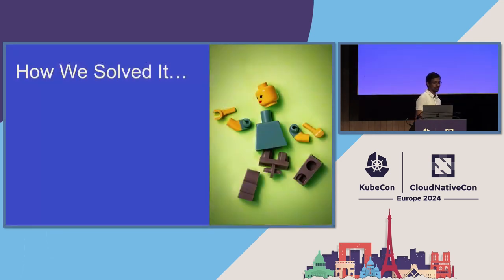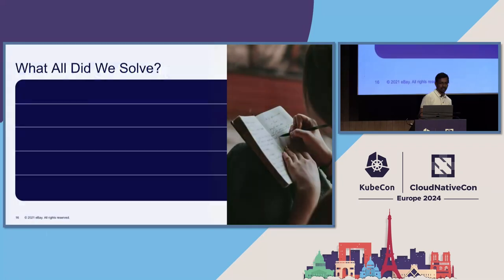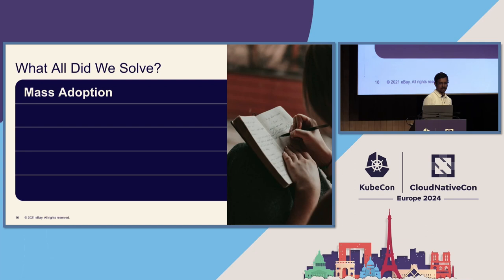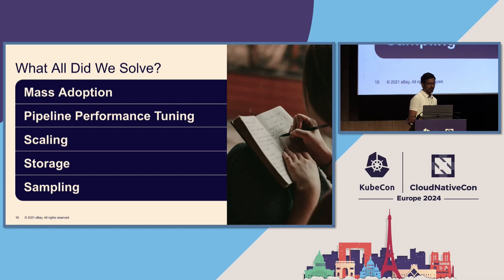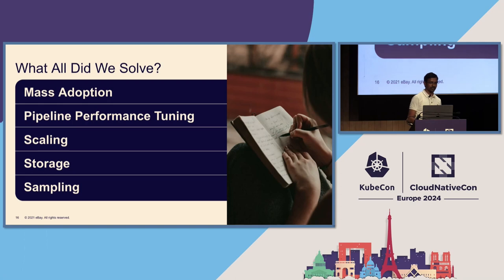So how did we go about solving this? There are multiple things that we did: first, we solved for mass adoption; we did pipeline performance tuning; we did some scaling-related tweaks; we optimized on storage; and then we went for sampling. The next few slides will talk about each one of them.